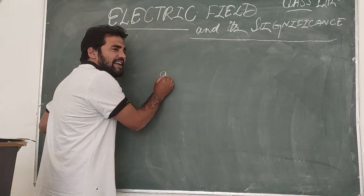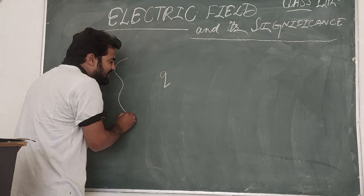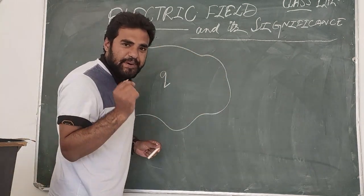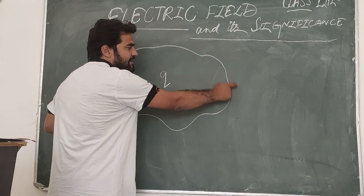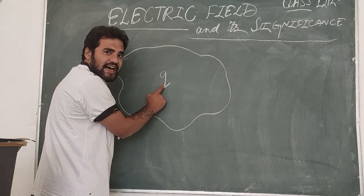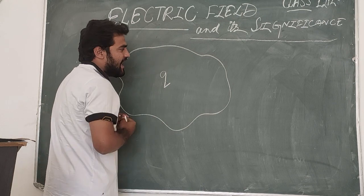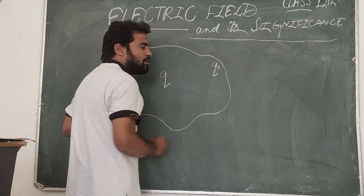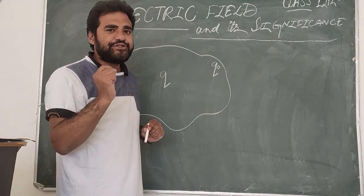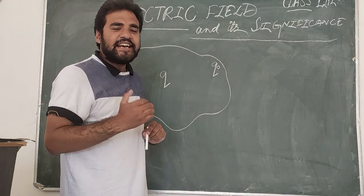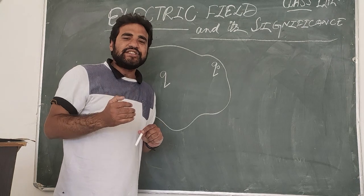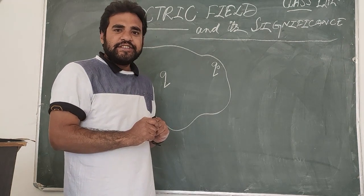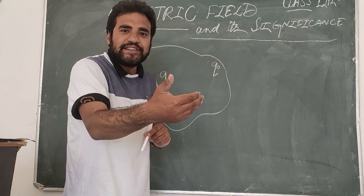The space around the charge where another test charge experiences a force — that region is relevant here. The test charge is denoted by q and is a very small charge.